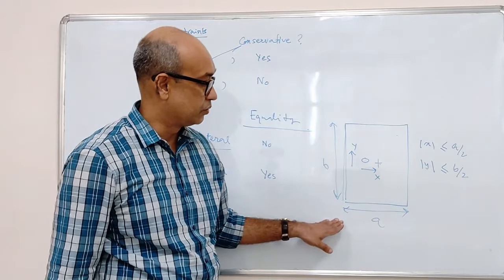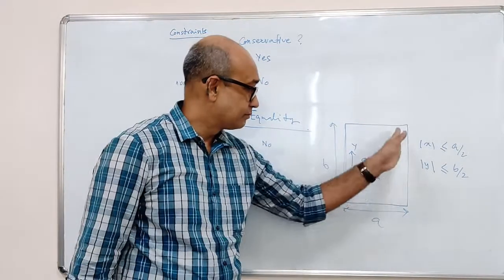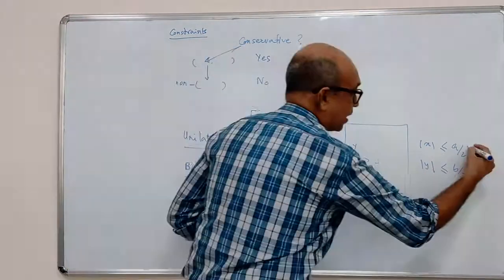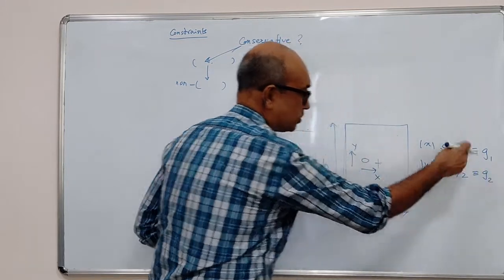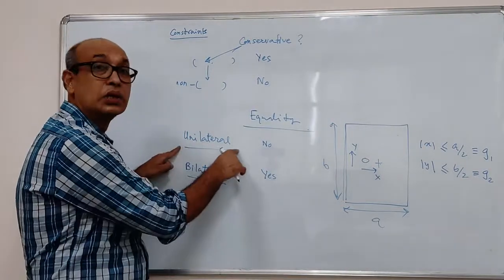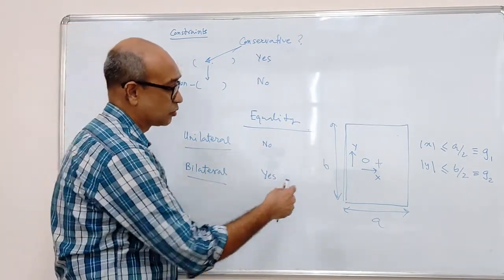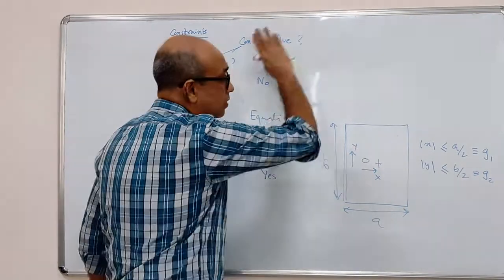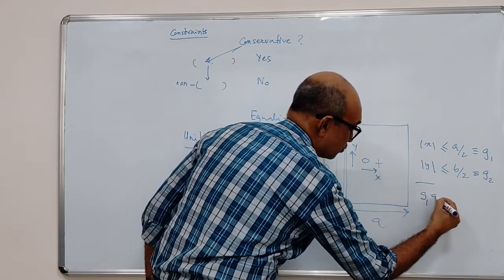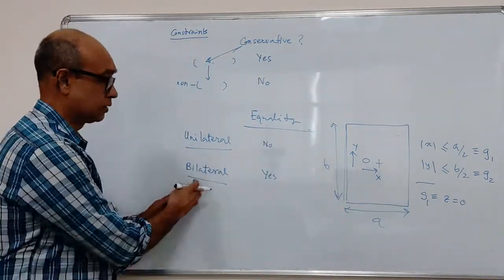x cannot be less than minus A by 2 and not more than plus A by 2. And the equality holds when it's exactly hitting the wall. In such cases, we have two constraints. This would be like G1 and G2, two constraints, and they are not given by equality. As such, this would be unilateral. Otherwise, suppose we remove the wall, suppose it is forced to move on this surface, and the constraint is given by only one constraint, G1 equivalent to z equal to 0. In that case, this is an equality, so we would call it bilateral.